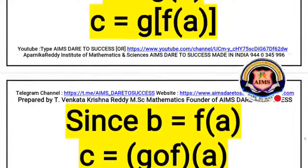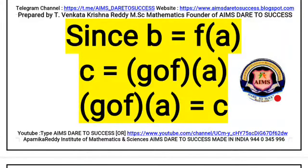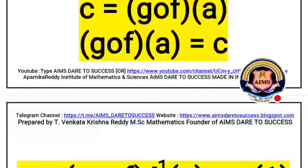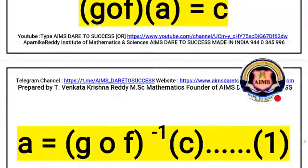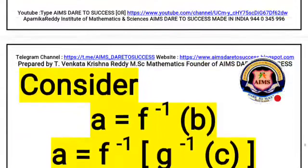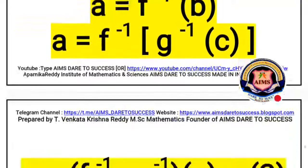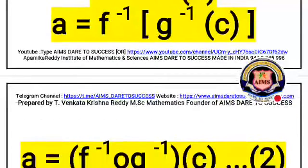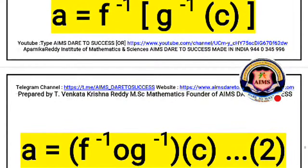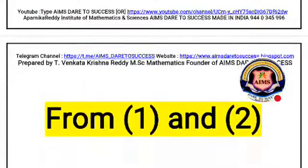After substituting the b value, which is F of a, we get c equals G of F of a. So G circle F of a is equal to c. Then a equals G circle F whole inverse of c — this is equation 1. Also, considering a equals F inverse of b, and b equals G inverse of c, we substitute to get a equals F inverse of G inverse of c, that is a equals F inverse circle G inverse of c — this is equation 2.